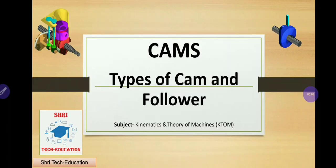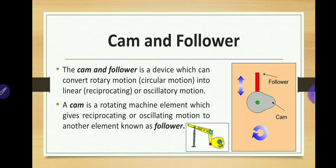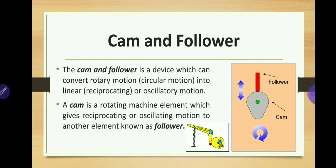Welcome to this video lecture series on the chapter Cams. In today's lecture we will see the introduction of cam and types of cams and follower. The cam and follower is a device which can convert a rotary motion or circular motion into linear reciprocating or oscillatory motion. The cam is a rotating machine element which gives the reciprocating or oscillatory motion to another element known as a follower.